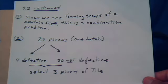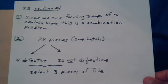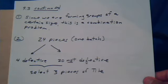Since we are forming groups of a certain size, this is a combination. So a combination counts how many groups of a certain size you could come up with.